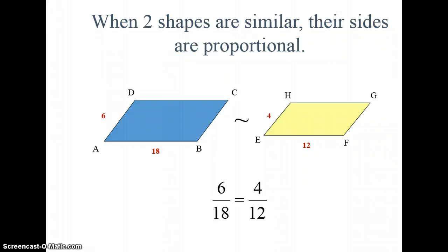Another thing you're going to notice about when two shapes are similar, their sides are going to be proportional. So if I take the left side here, which is 6, and compare it to the bottom side, which is 18, 6 over 18, it's going to have a proportion that is equal to the left side of my second figure and the bottom of my second figure. Do you see how I have side to bottom, side to bottom?